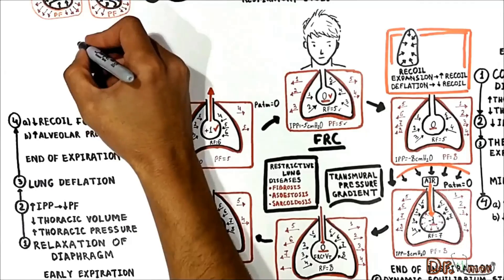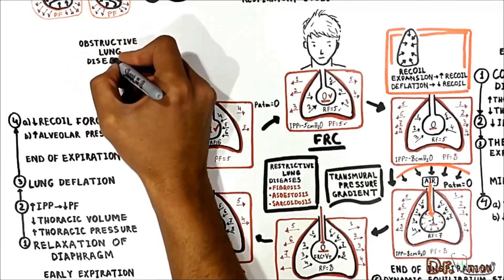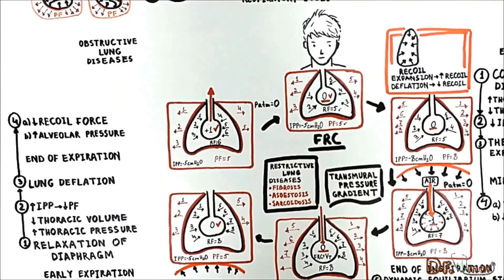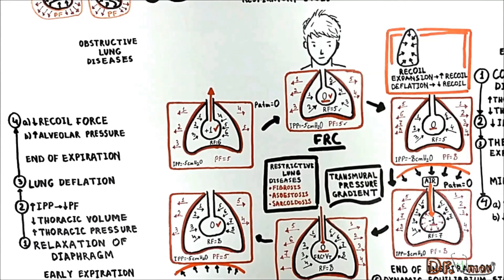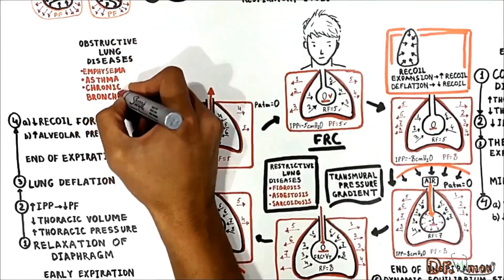In clinical practice, in obstructive diseases of the lung, the ability of the lung to develop positive alveolar pressure decreases. When the lung system cannot develop positive alveolar pressure, air flow out of the lung will be difficult, leading to problems with expiration. Examples of obstructive lung diseases include emphysema, asthma, and chronic bronchitis.